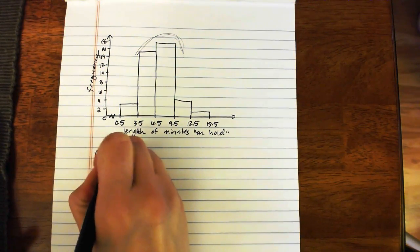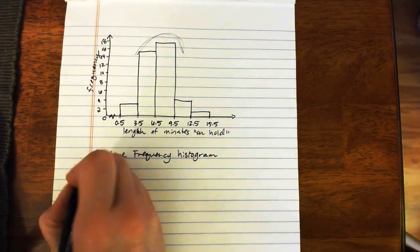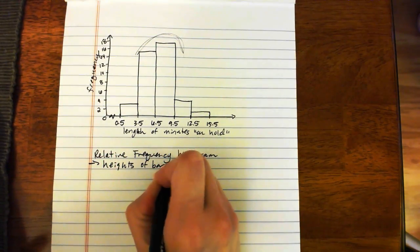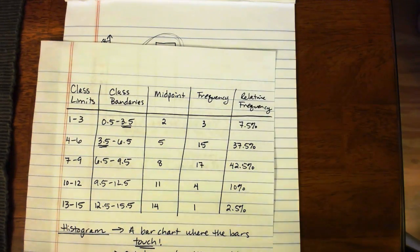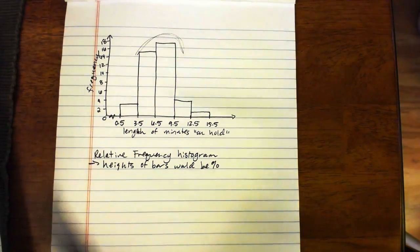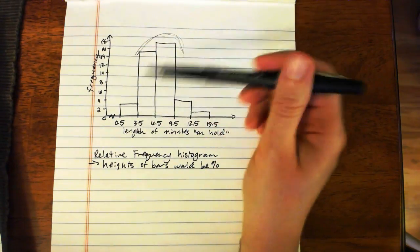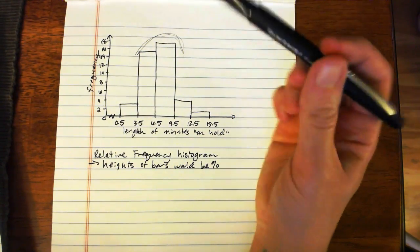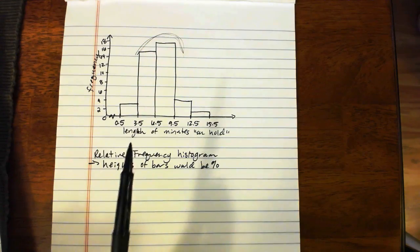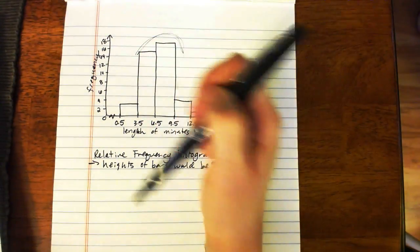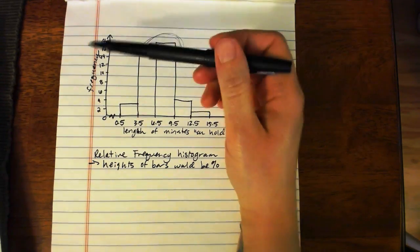If we wanted to make a relative frequency histogram instead of a regular histogram, the heights of the bars would be percents. And they would come from the final column over here, the relative frequency column. These percentages would form the height of each of the bars. And I'll leave it to you to do as an exercise. But you'll find if you do that, if you make a relative frequency histogram, while the scale here will change, the relative spacing of the bars will be the same. You'll get essentially the exact same picture of how the data are distributed in the relative frequency histogram that you do in a regular histogram.